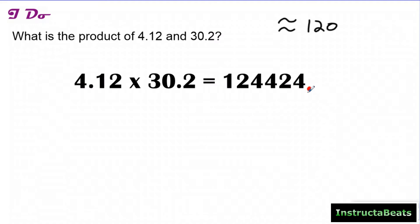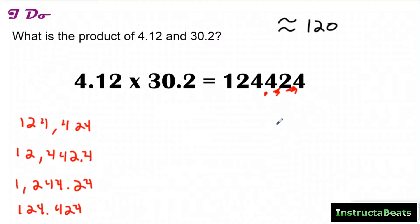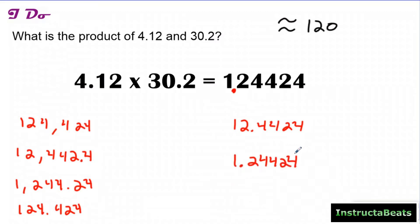There are a lot of different places you could put your decimal. You could put it at the end and that number would be one hundred twenty four thousand four hundred twenty four. You could move it one place value to the left and your answer would be twelve thousand four hundred forty two and four tenths. Move it one more and your answer would be one thousand two hundred forty four and twenty four hundredths. Move it one more and your answer would be one hundred twenty four and four hundred twenty four thousandths. You could put it next to the two for twelve and four thousand four hundred twenty four ten thousandths, or next to the one for one and twenty four thousand four hundred twenty four hundred thousandths.